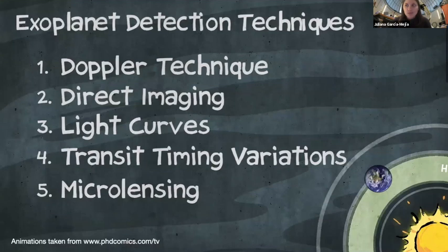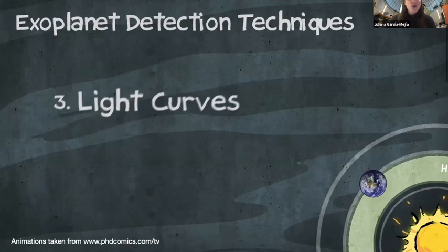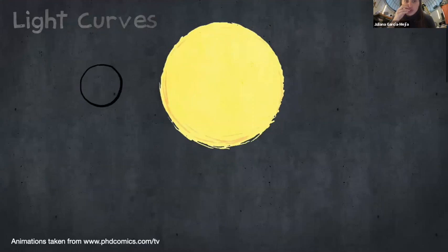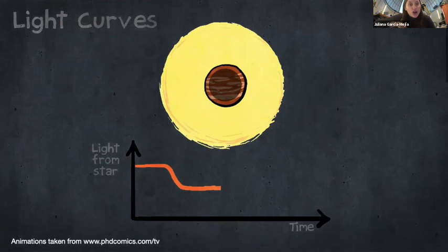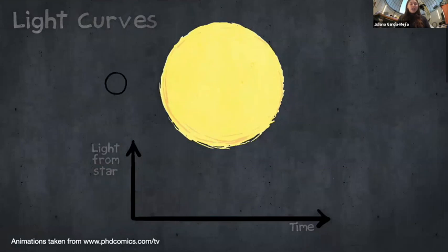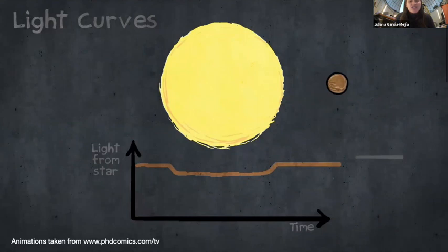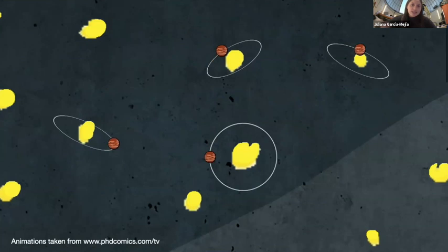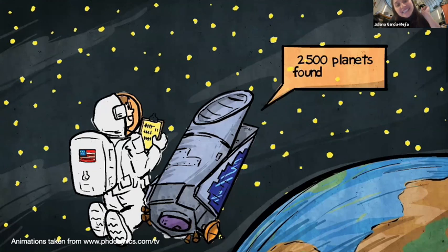The other detection method — actually my favorite — is called the light curve method or the transit method. We point the telescope at a bunch of stars and track how much light is coming from each. As a planet passes in front of the star, it causes a dip in the amount of light. We need to see it periodically because the planet is orbiting the star. If the planet is huge, we get a huge dip; if it's tiny, a tiny dip — the depth of the well tells us how big or small the planet is. About ten years ago, we launched the Kepler telescope, which discovered 2,600 confirmed planets.